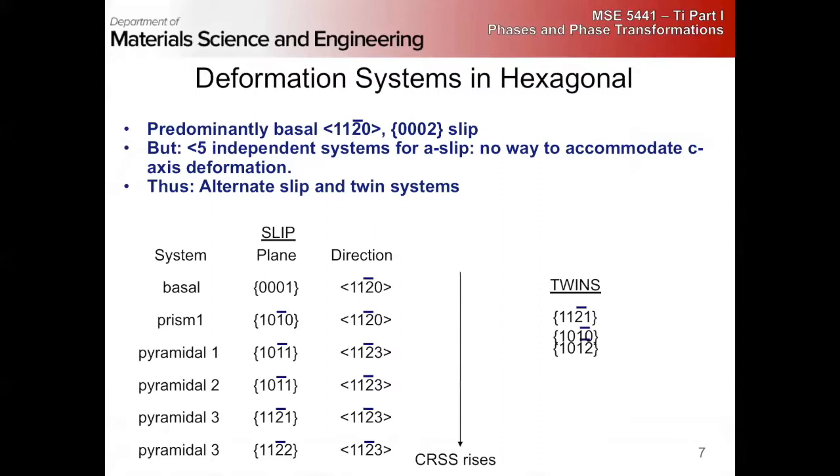Which one of these does titanium prefer? Any idea? Prismatic is easier in titanium, zirconium, hafnium, beryllium. We'll talk about why in a little bit. Magnesium strongly favors basal slip, which is much easier. But in general, what do we know about these?